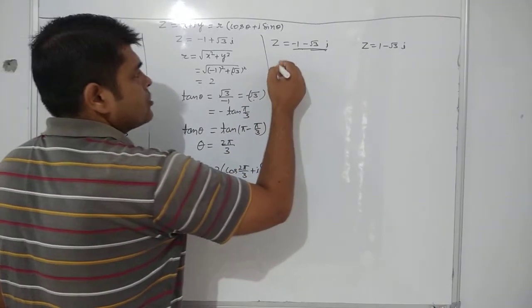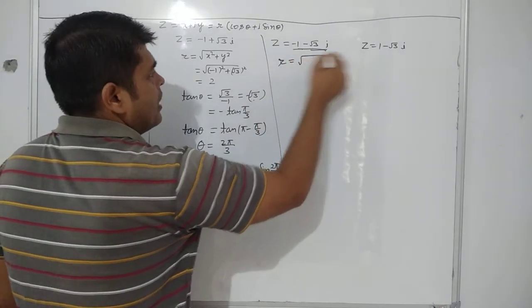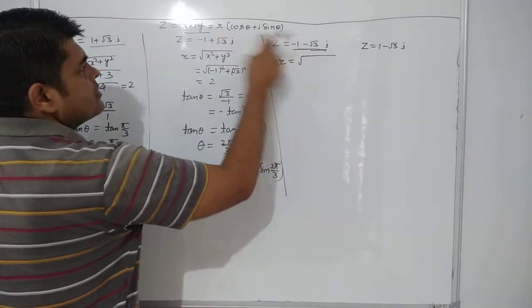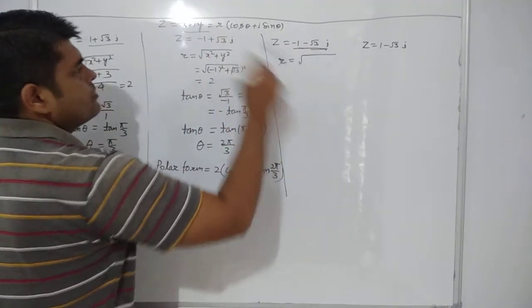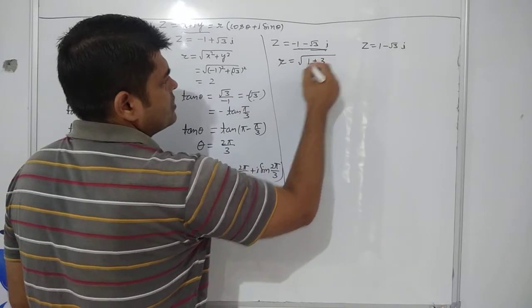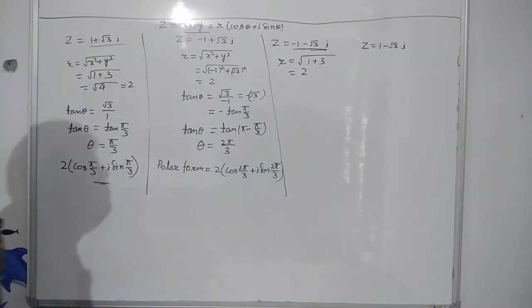It is in third quadrant, so find out the value of r. r is minus 1. If you compare with this, x equals to minus 1, y equals to minus root 3. So, minus 1 whole square is 1, minus root 3 whole square is 3 and you are going to get z equals to 2.